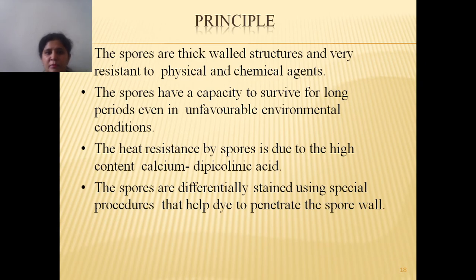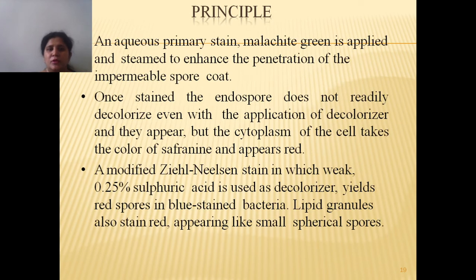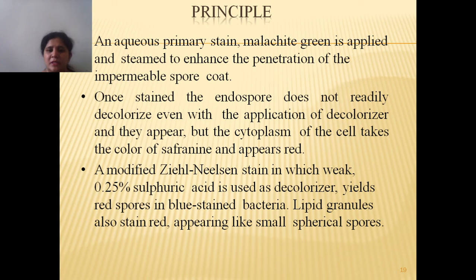The principle of spore staining: spores are thick-walled structures that are highly resistant to physical and chemical agents and have the capacity to survive for long periods even in unfavorable environmental conditions. The high heat resistance of the spore is due to the presence of a high percentage of calcium dipicolinic acid within them. We make use of two stains: the primary stain malachite green is applied over the smear and the smear is steamed to enhance penetration of malachite green within the spore coat. The endospore does not readily decolorize even with decolorizers, and the cytoplasm takes the counter stain safranin and appears red in color.